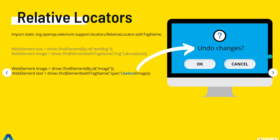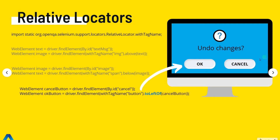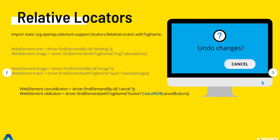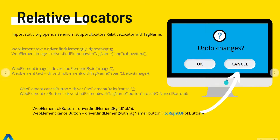Let's see how we can find one of the buttons. We're going to try to find the OK button. We start by finding the cancel button, then we find the OK button by saying: find the web element with the tag name button that is to the left of the cancel button. And to find the cancel button, we could start with the OK button and say: find the button that lies to the right of the OK button.